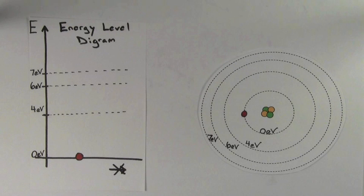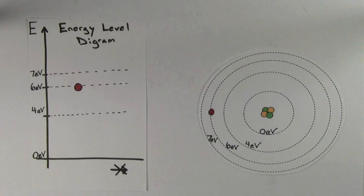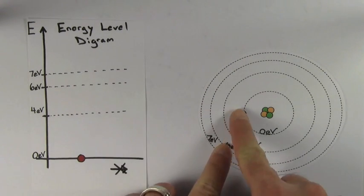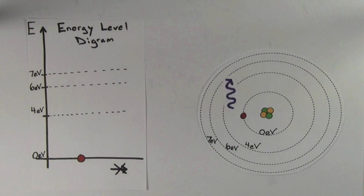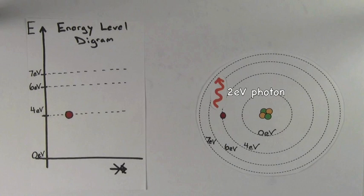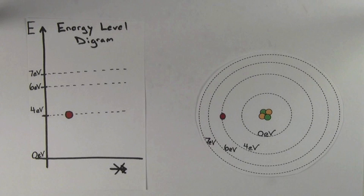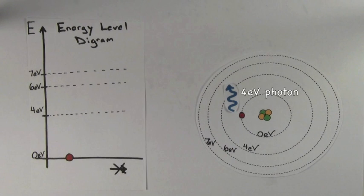Electrons don't have to just jump one energy level at a time. If the electron in the ground state were to absorb a 6 eV photon, the electron could jump all the way up to the 6 eV energy level. Now there are a couple ways it could fall back down. The electron could fall to the ground state all in one shot, giving up a 6 eV photon in the process. Or it could fall first to the 4 eV energy level, emitting a 2 eV photon — since it dropped 2 electron volts in energy — and then fall back down to the ground state, emitting a 4 eV photon.